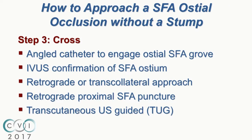There are multiple ways to address a true, without-stump osteal SFA occlusion. Options include: feeling with an angled catheter — especially a micro-multipurpose — for the osteal groove; wiring into the profunda and using intravascular ultrasound to locate the ostium, using any calcification to guide toward the nub and confirm the pathway to the SFA; retrograde and transcollateral approaches; recently published retrograde proximal SFA puncture techniques; and transcutaneous ultrasound-guided approach for osteal flush SFAs.